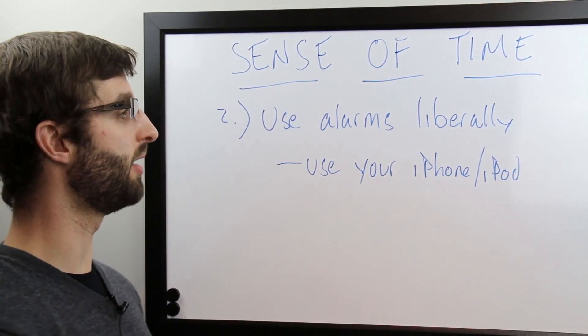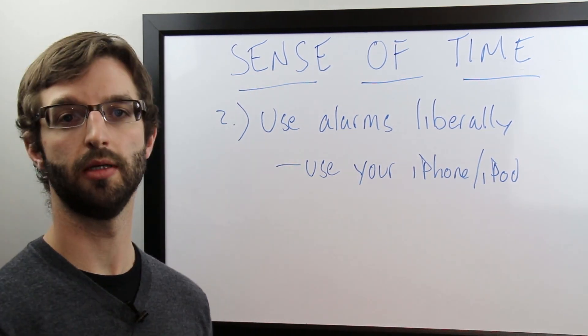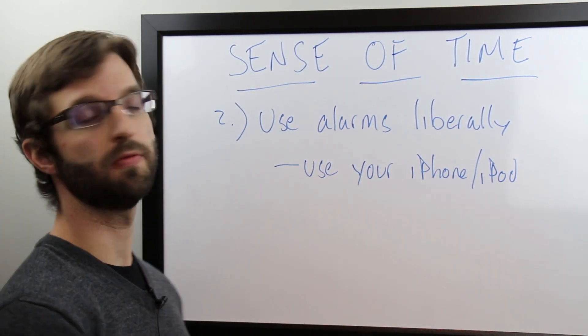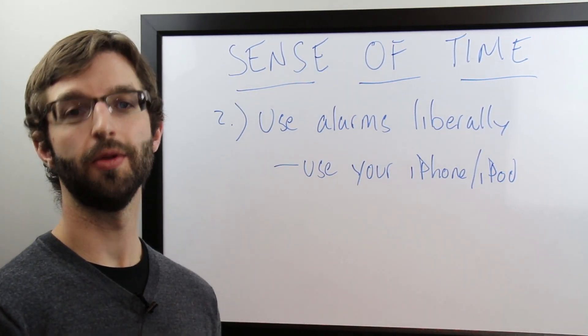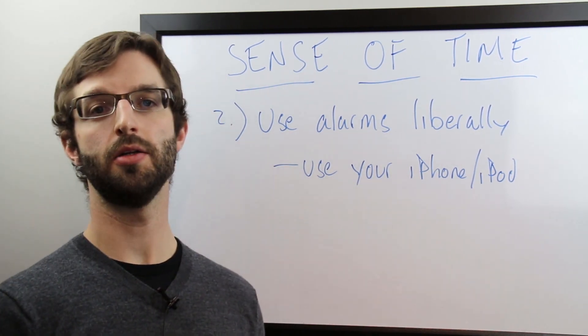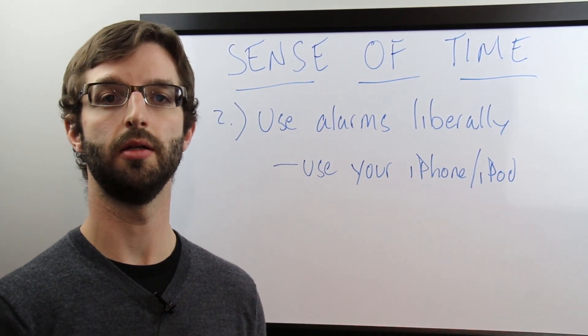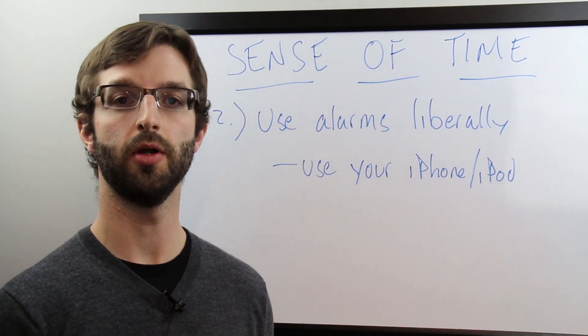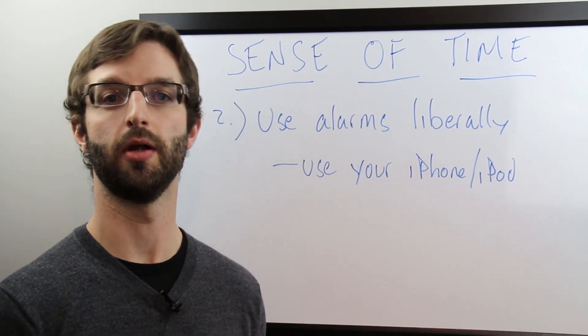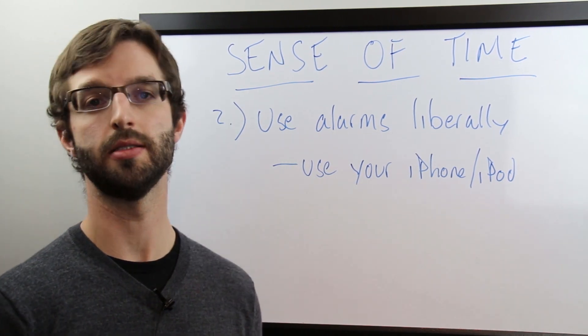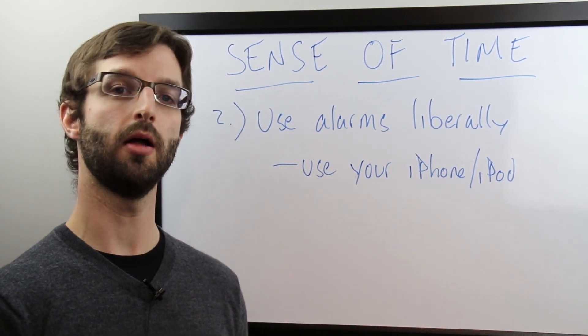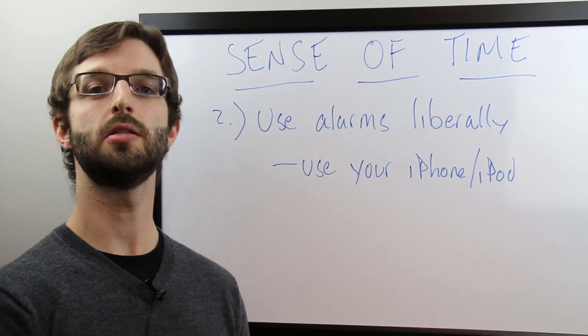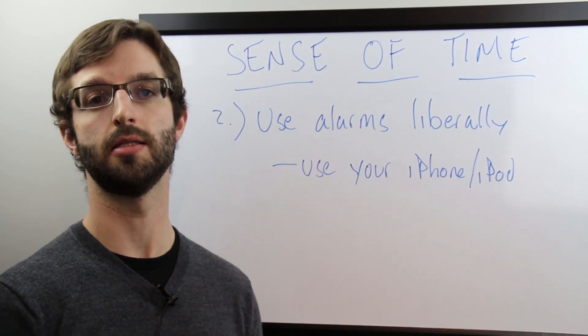A second key strategy is to use alarms liberally. We all have some kind of smartphone, iPhone, iPod. One of the great features of these pieces of technology is that you can use them to set reminders, set alarms for everything. If 3 o'clock every day you need to start your homework, put a reminder in your phone, start homework. If you want to make sure you're getting to bed on time, set a reminder in your phone, 8 o'clock, time for bed. You can set these throughout the day to help keep you on track as the day moves on.